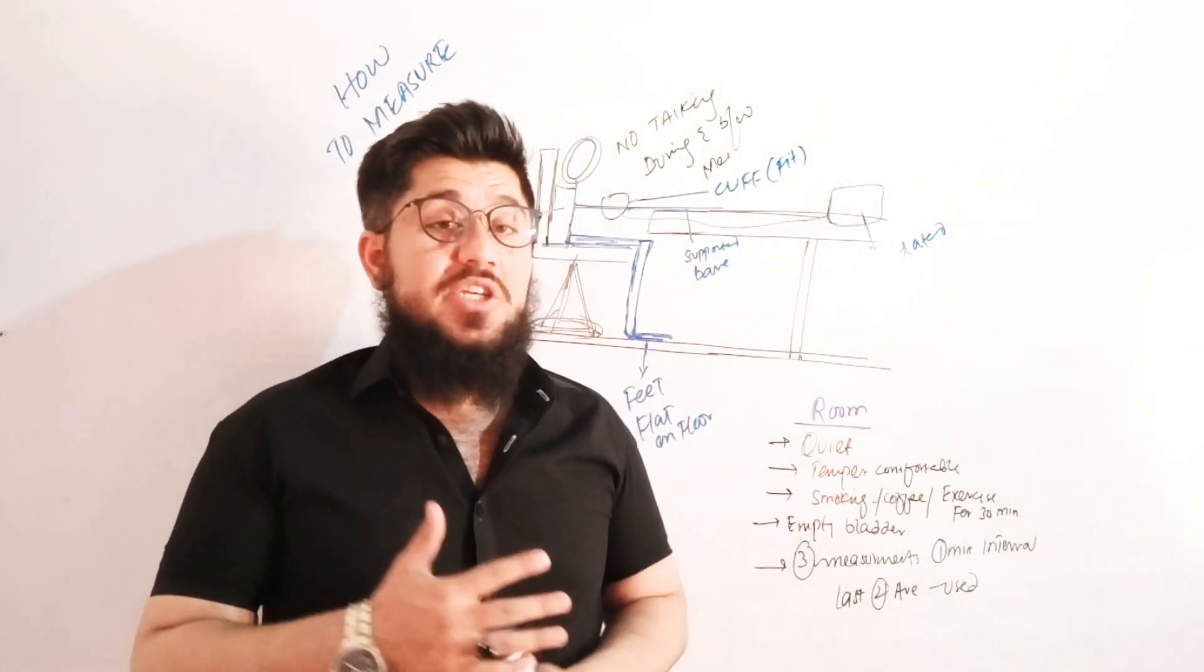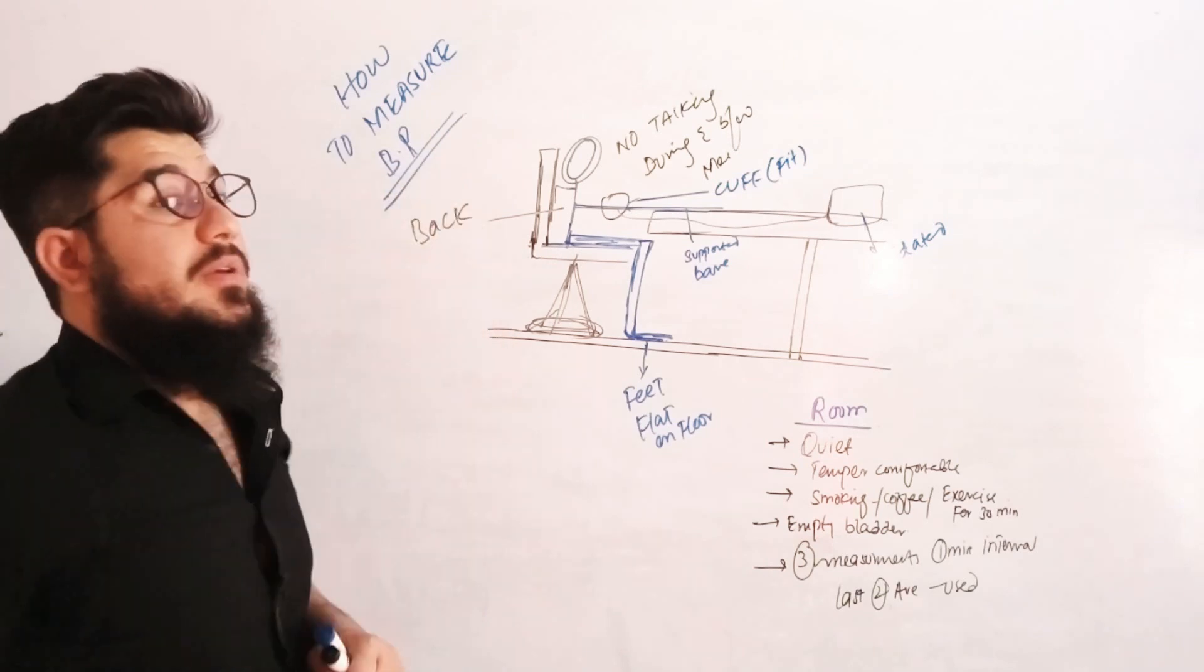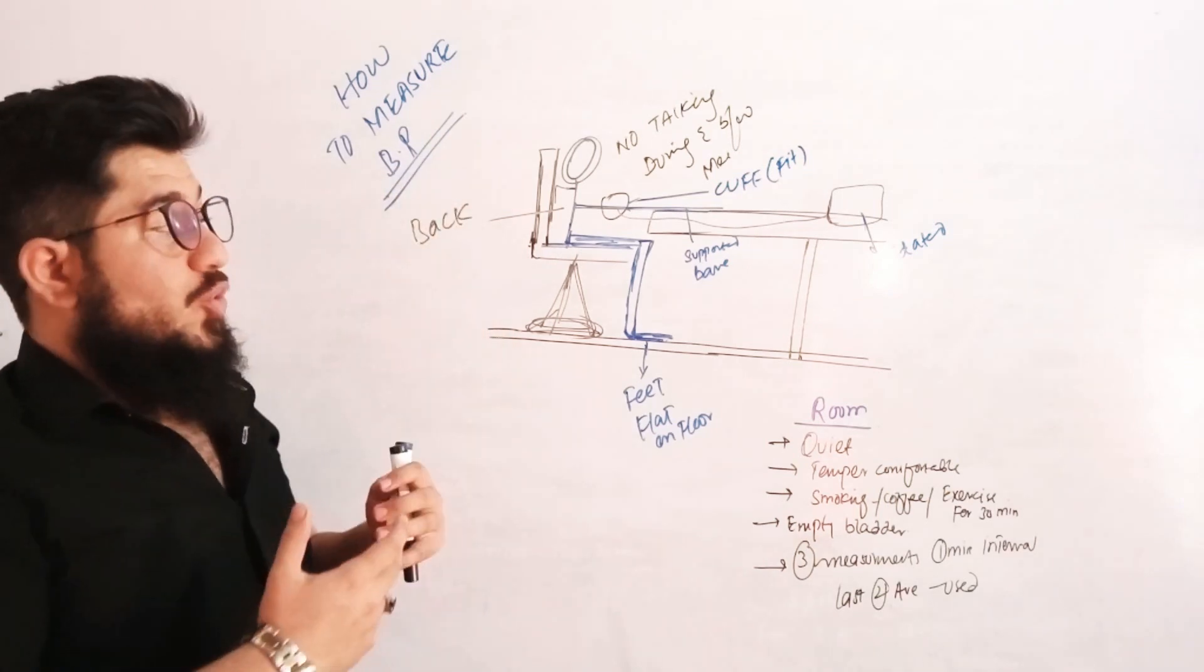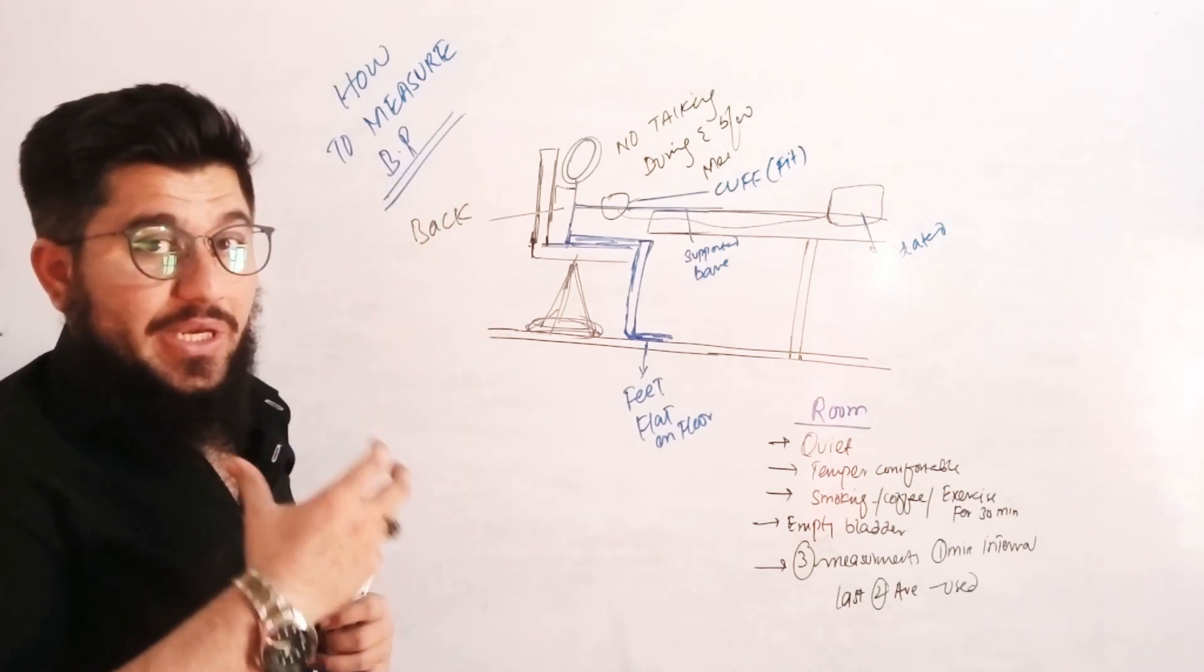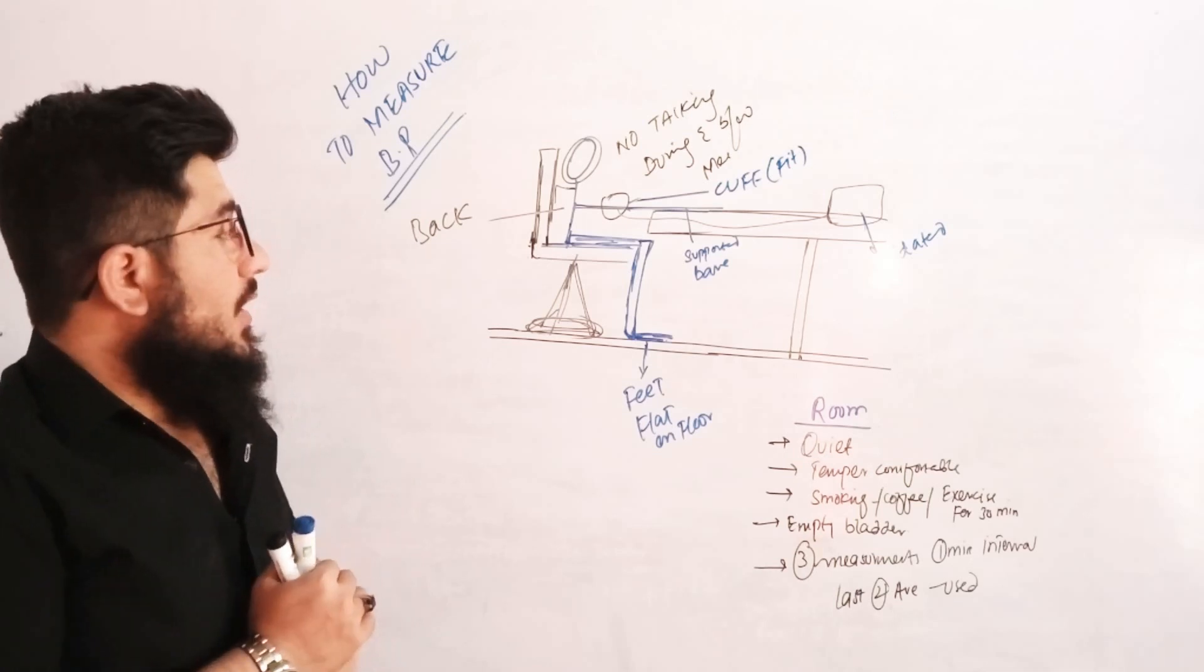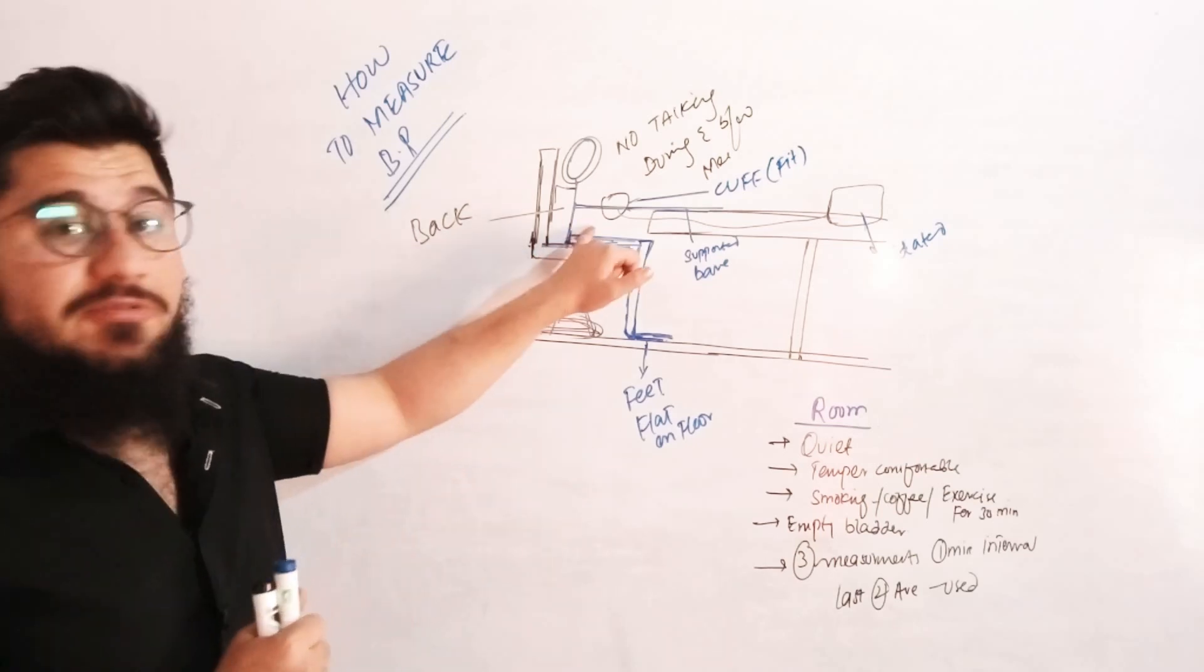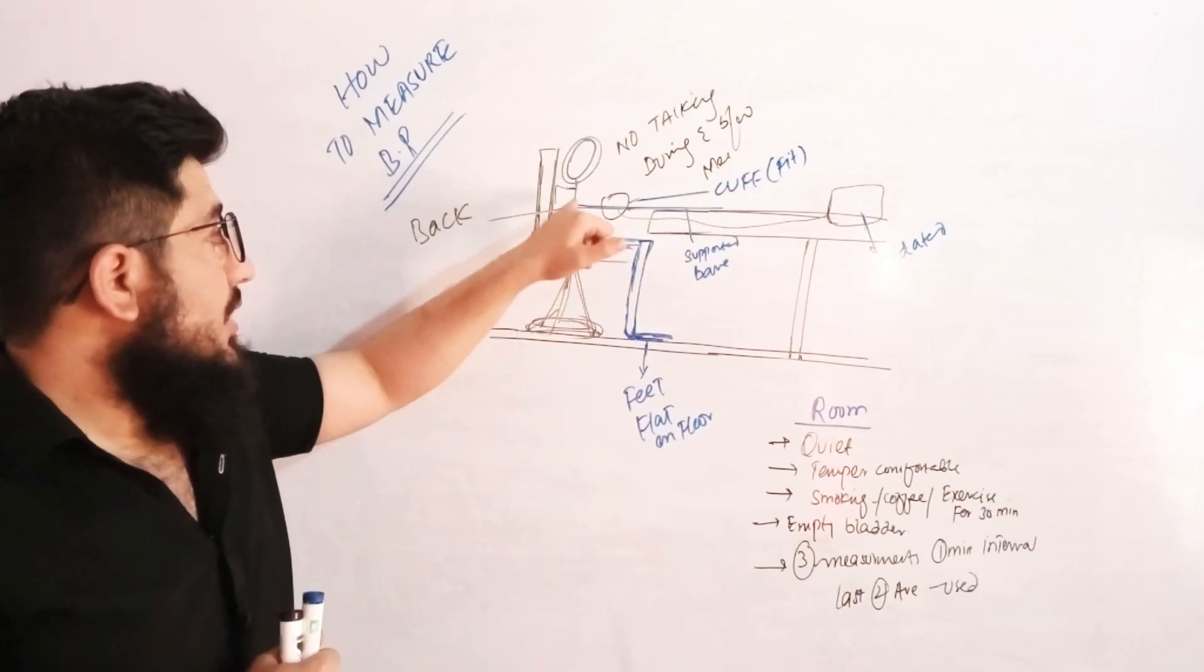Today's topic is how to measure blood pressure. We'll be discussing the best way to measure blood pressure. The patient who is presented for measurement must be provided a seat where his back is supported.